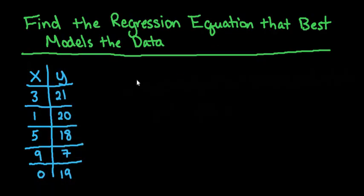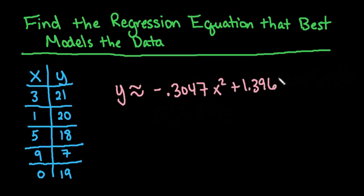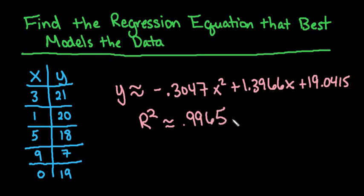Let me just write down the equation so you would know how to put it on paper. I chose to round to four decimal places, so I would have y is approximately negative 0.3047x squared plus 1.3966x plus 19.0415. And our R-squared—remember this just again tells us what percentage of our variability is explained by the data. This is a very strong number, so if you see something like this, you know it's a very strong model.